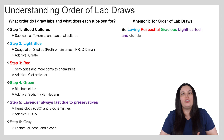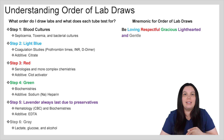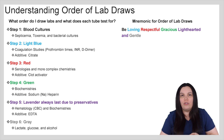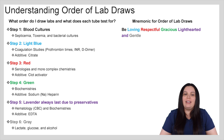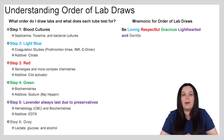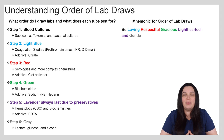Step one, we always want to draw our blood cultures. Our blood cultures are going to help us diagnose septicemia, toxemia as well as bacterial cultures when it comes to our sepsis patients. The next one we want to draw is our light blue. That's going to be our coagulation studies such as our prothrombin times, INR as well as D-dimers.